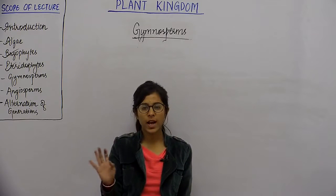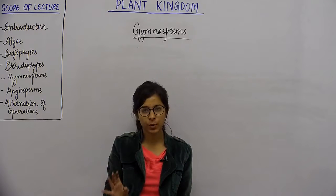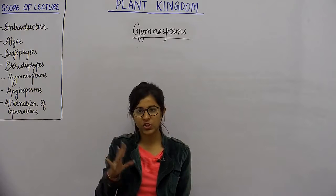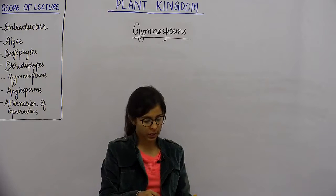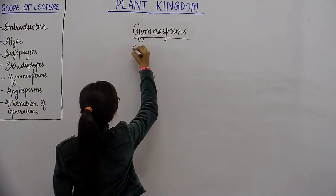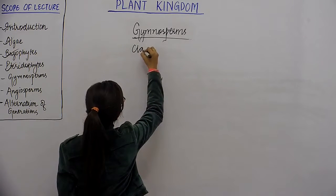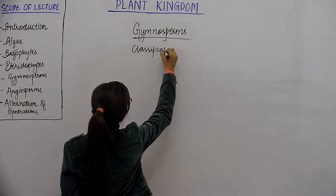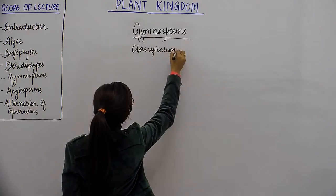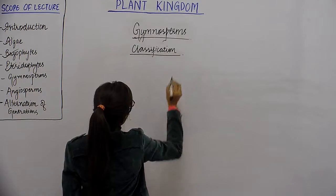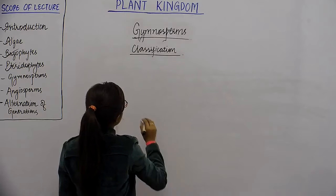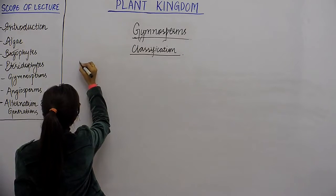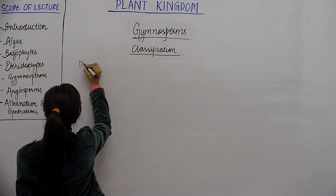Now we are going to study the classification of Gymnosperms. Gymnosperms is divided into four divisions. We will start with Division 1.